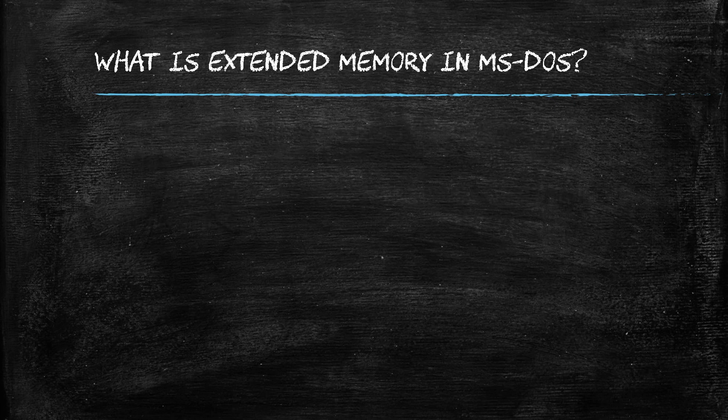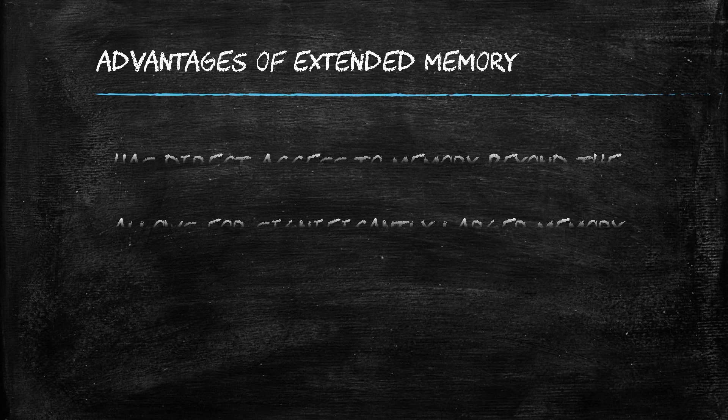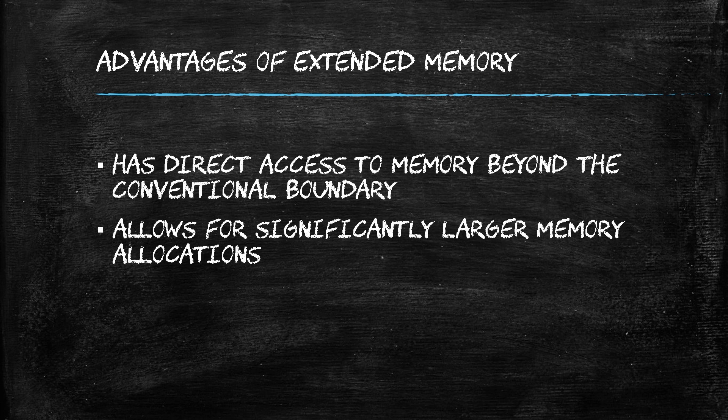What is extended memory in MS-DOS? Extended memory refers to memory that resides above the first megabyte of address space, a realm previously inaccessible to conventional DOS programs. Extended memory can be accessed by DOS programs running in protected mode, a more advanced operating mode that enables direct access to memory beyond the conventional boundary. This allowed for significantly larger memory allocations, enabling DOS programs to handle more complex tasks and utilize advanced features.